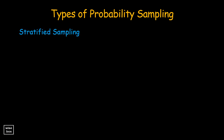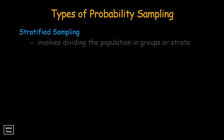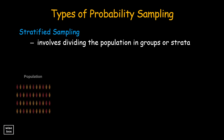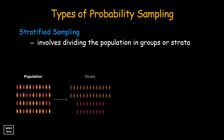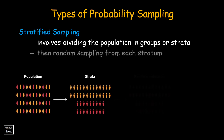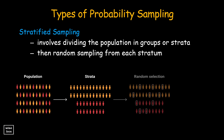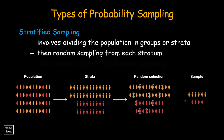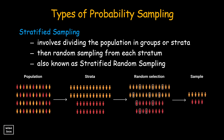Stratified sampling is a probability sampling procedure that involves dividing the population into groups or strata, defined by the presence of certain characteristics, and then random sampling from each stratum. It is also known as stratified random sampling or proportional random sampling.